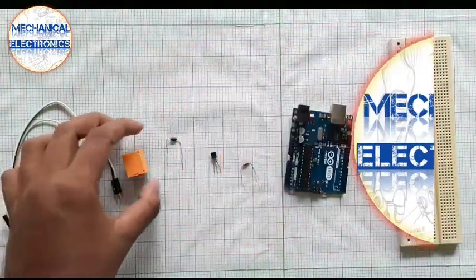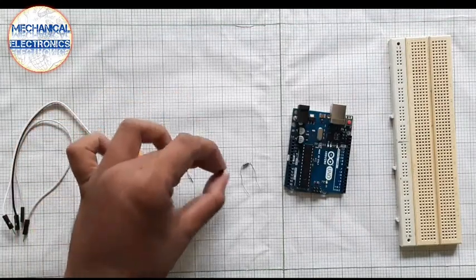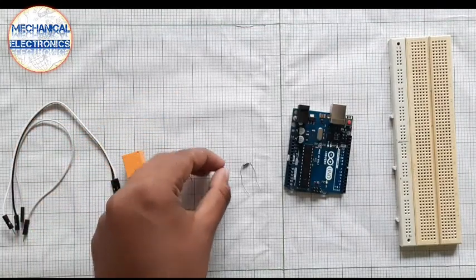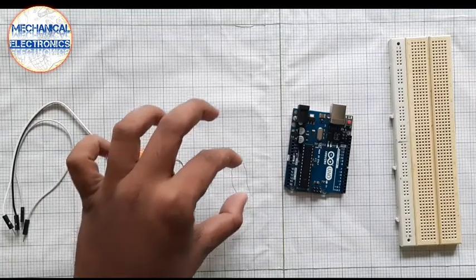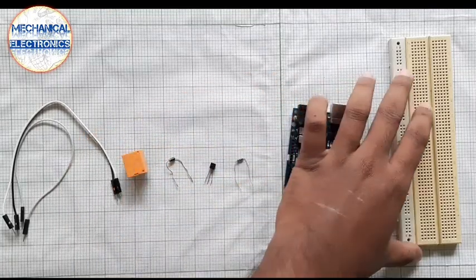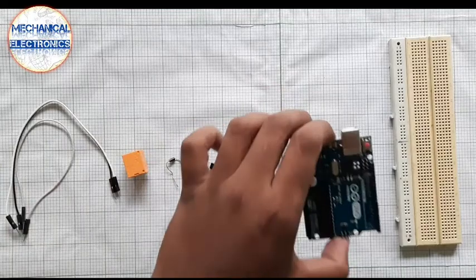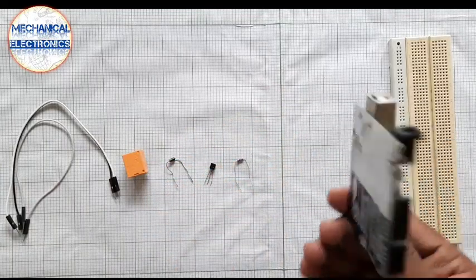A 12 volt relay module, a diode, a transistor of value BC547, a resistor of value 1K, a breadboard, some jumper wires and Arduino Uno board if required.